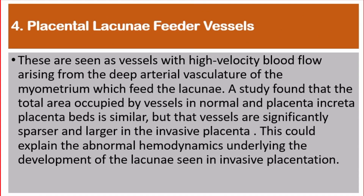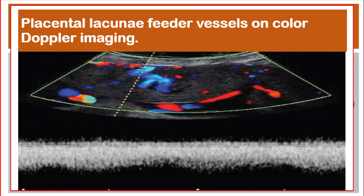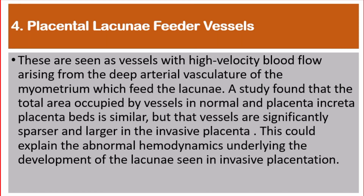Number 4: Placental lacunae feeder vessels. These are seen as vessels with high-velocity blood flow arising from the deep arterial vasculature of the myometrium, which feeds the lacunae. A study found that the total area occupied by vessels in normal and placenta increta placental beds is similar, but that vessels are significantly sparser and larger in the invasive placenta. This could explain the abnormal hemodynamics underlying the development of the lacunae seen in invasive placentation.